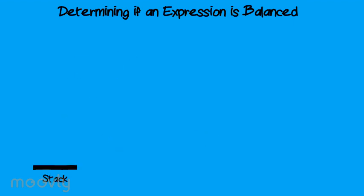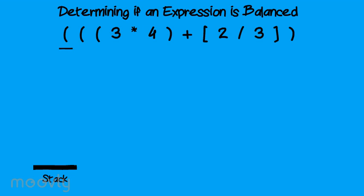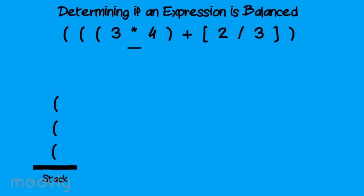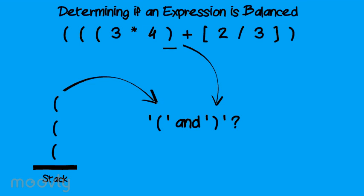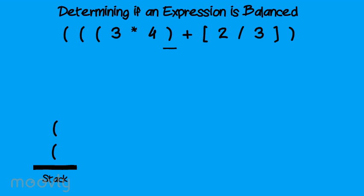We can use a stack to determine if an expression is balanced. Basically, we will parse through the string, ignoring all non-parenthesis tokens. When we find a parenthesis, bracket, or brace, if it is an open parenthesis, we put it onto the stack. Note that we will ignore any token that is not a parenthesis, bracket, or brace. When we reach a closing parenthesis, we compare it to the top of the stack. If the top of the stack is a matching parenthesis, we pop the stack and keep going. Otherwise, we know that the expression is not balanced.